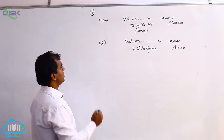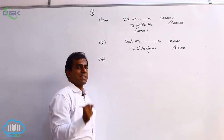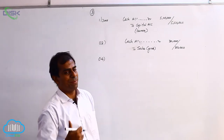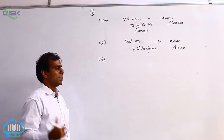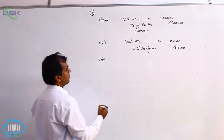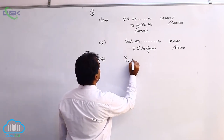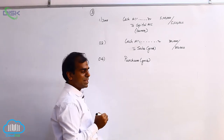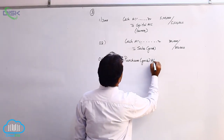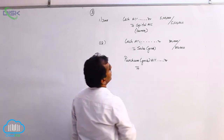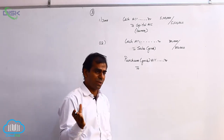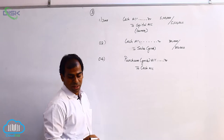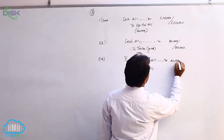The next transaction is on the 4th — simply the word purchases is given. Just like the previous transaction where sales implied a cash sale, here we apply it as a cash purchase of goods. We are buying goods, so goods are coming in. Goods are a real account — debit what comes in — so we debit purchases account. We are paying cash for it; cash is a real account, credit what goes out. So we credit cash. The amount is 40,000.